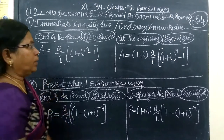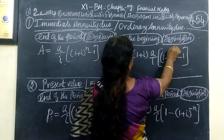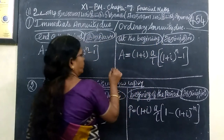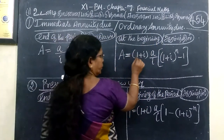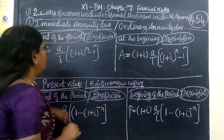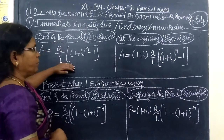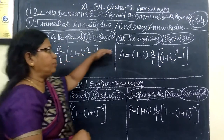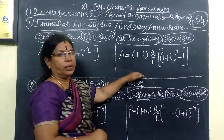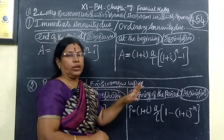That means, at the beginning of the period, we will use the formula for the end of the period. At the beginning of the period, we will use 'due.' The due is for the beginning.